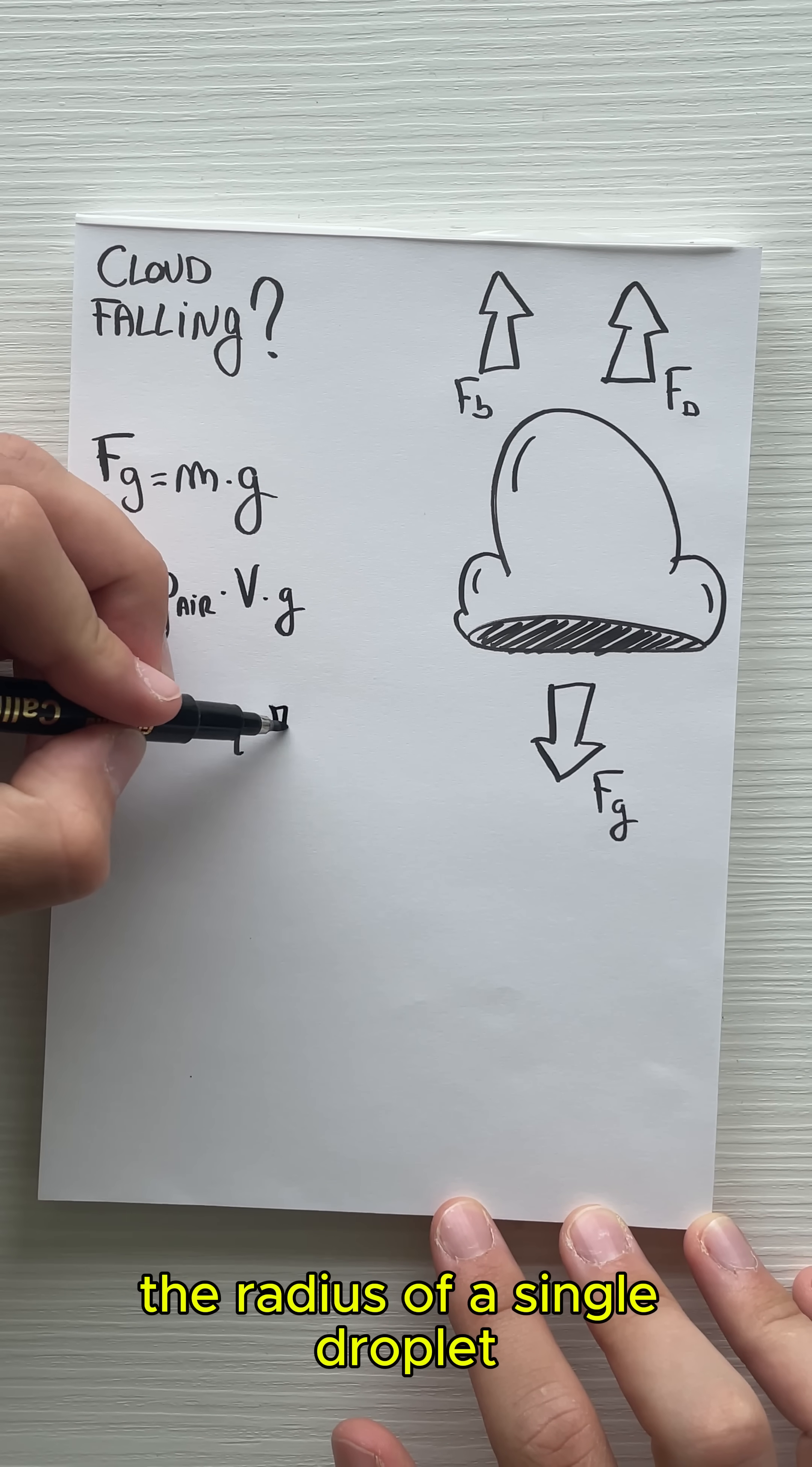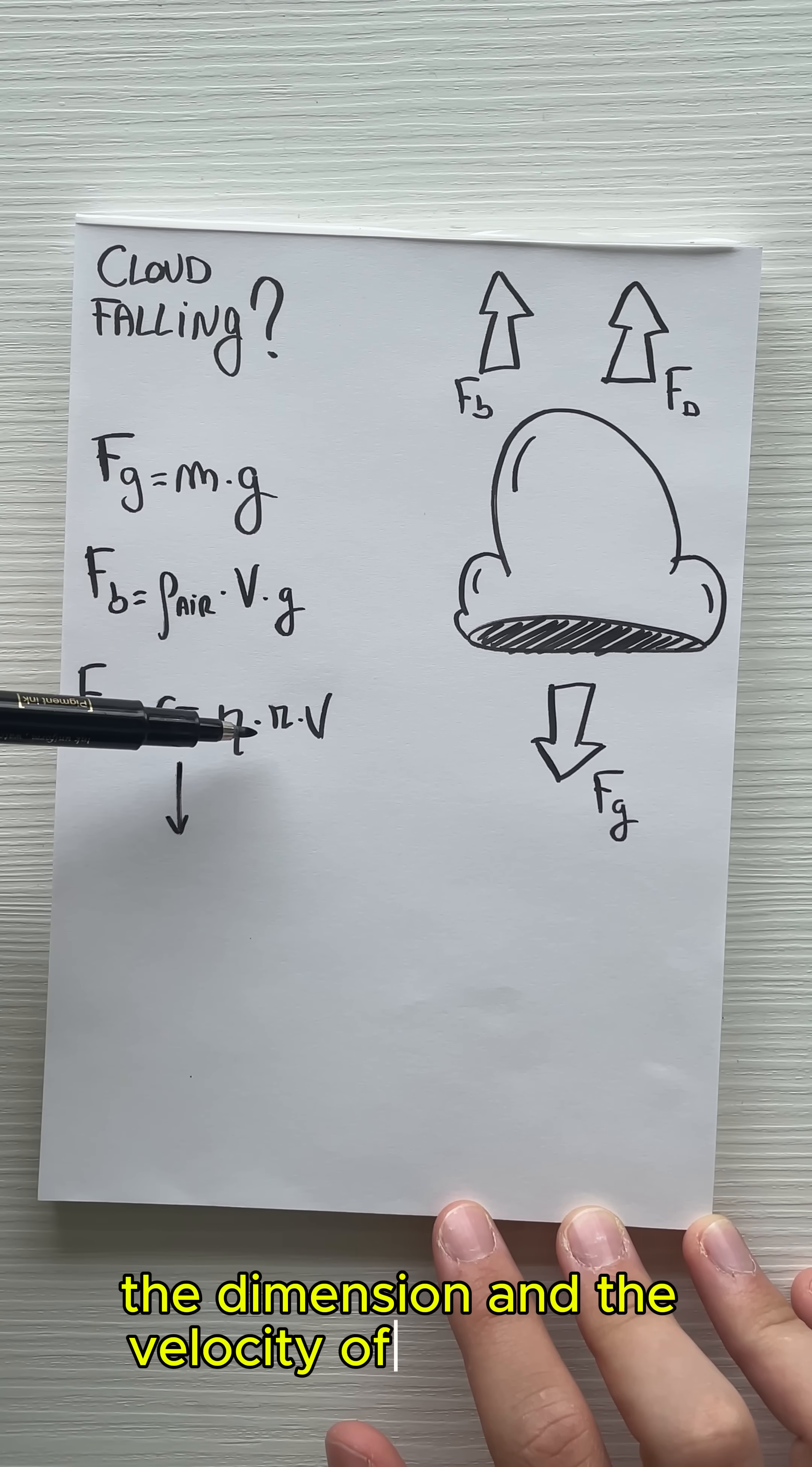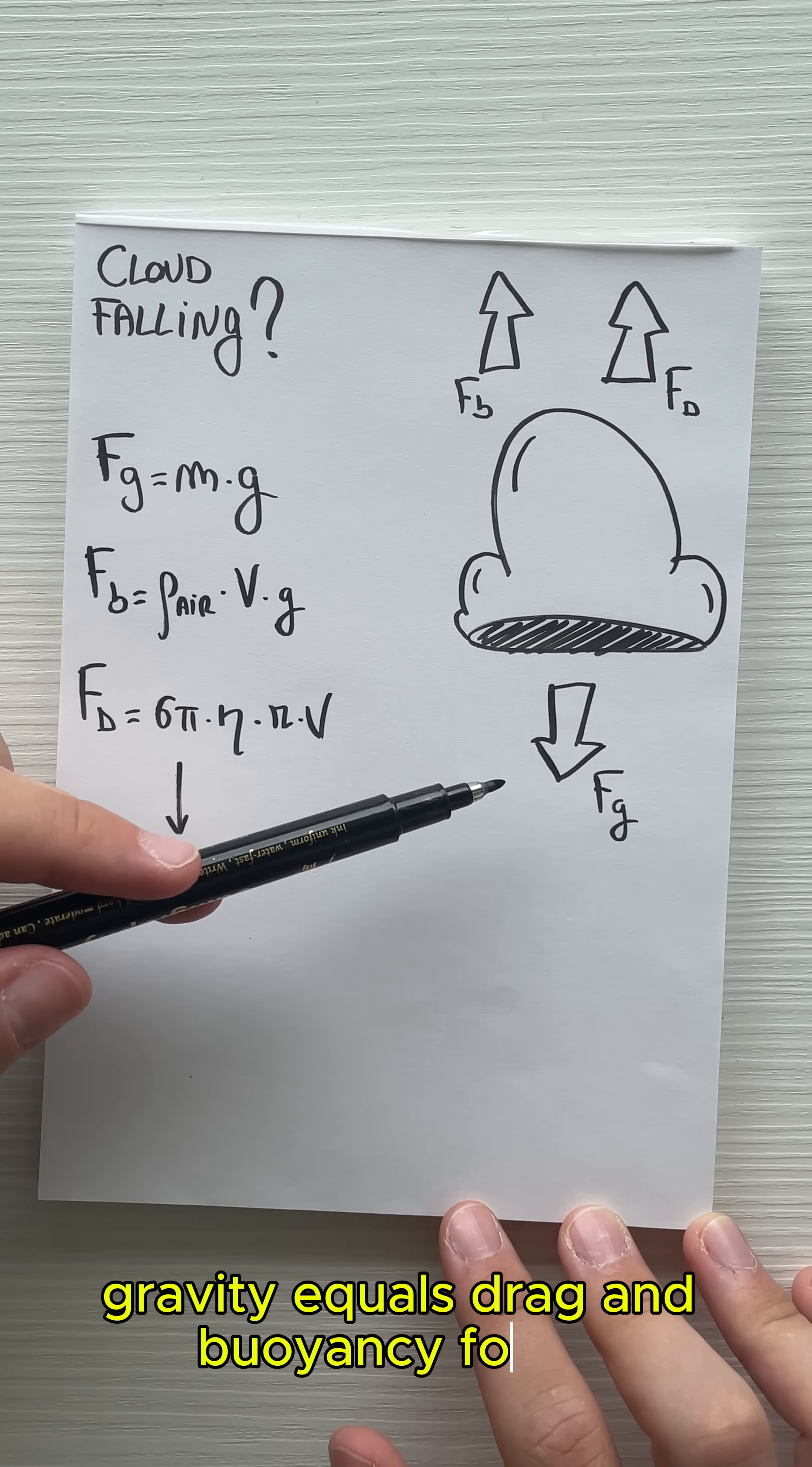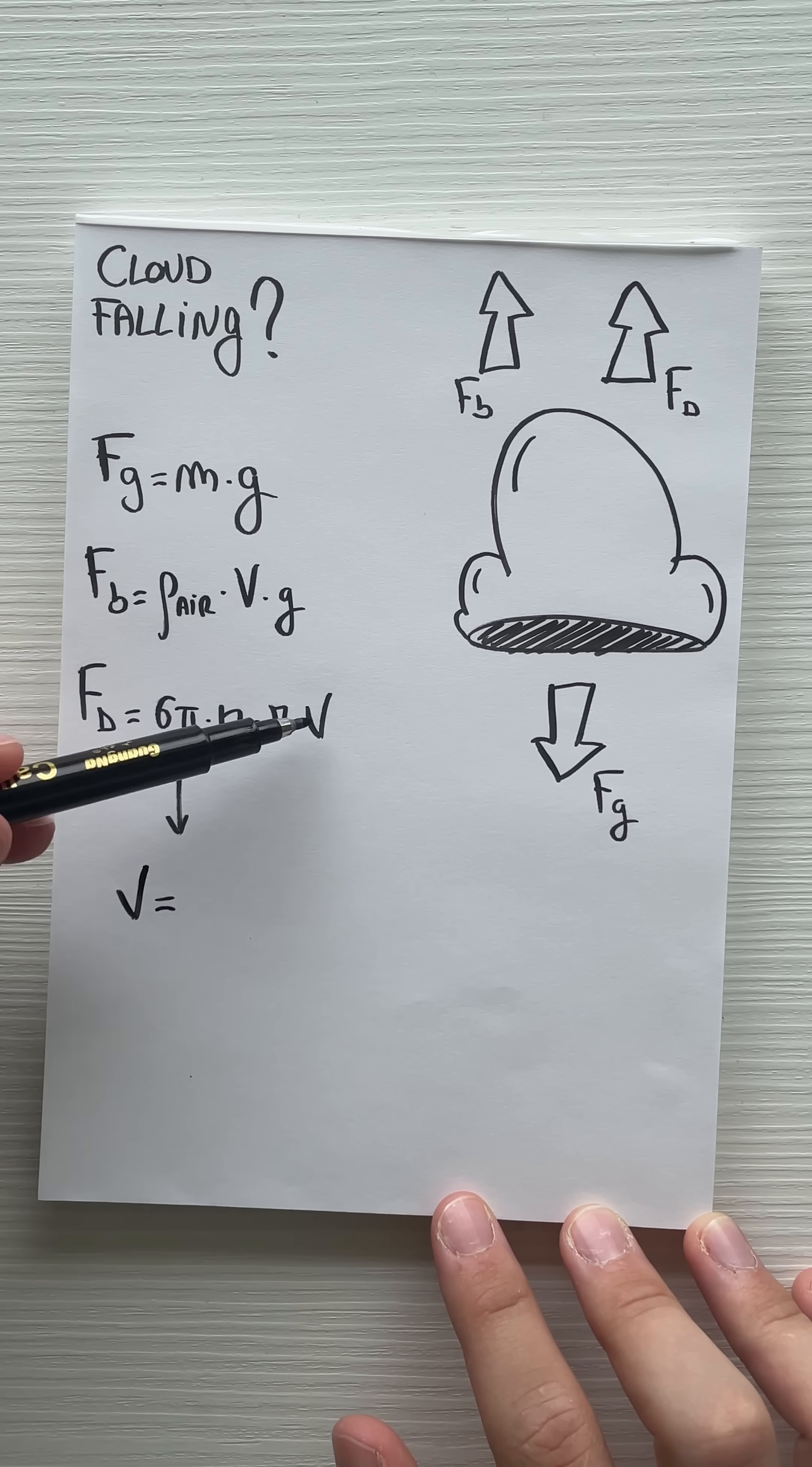If we make some assumptions about dynamic viscosity, the dimension and the velocity of the droplet, the volume and the mass, we can create an equation where gravity equals drag and buoyancy forces. And if we put everything together, we will end up finding a velocity that is equal to 0.01 meters per second.